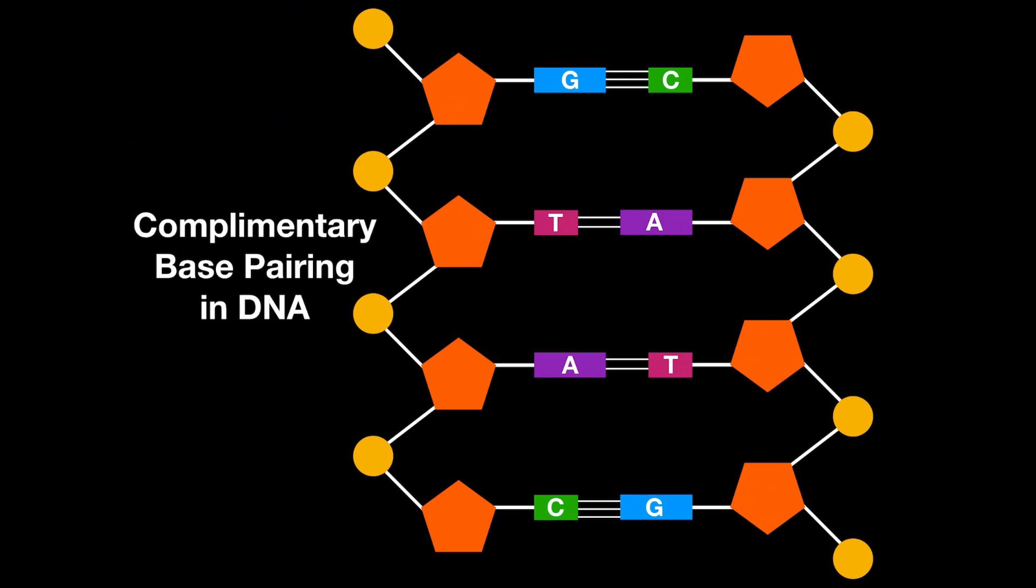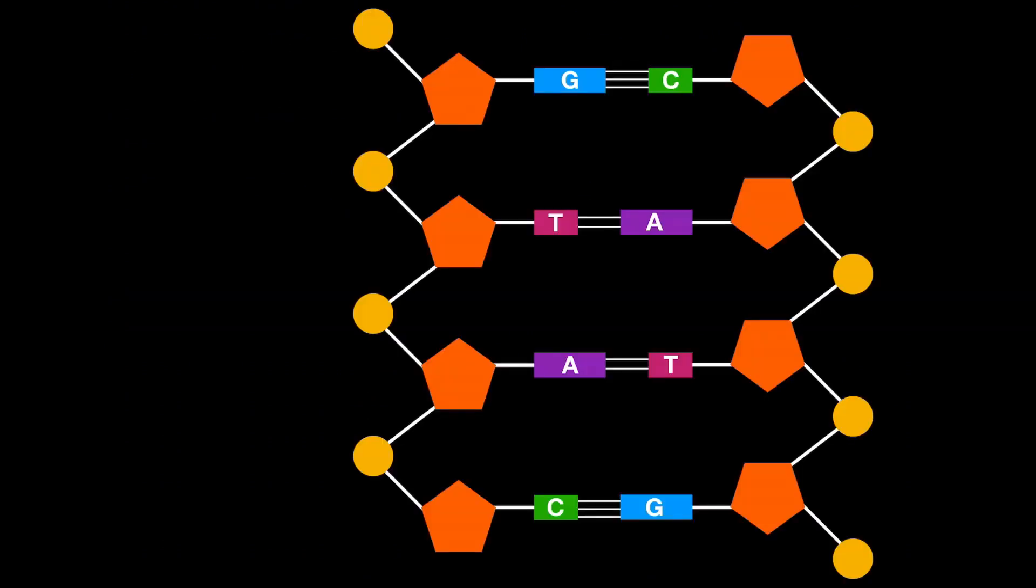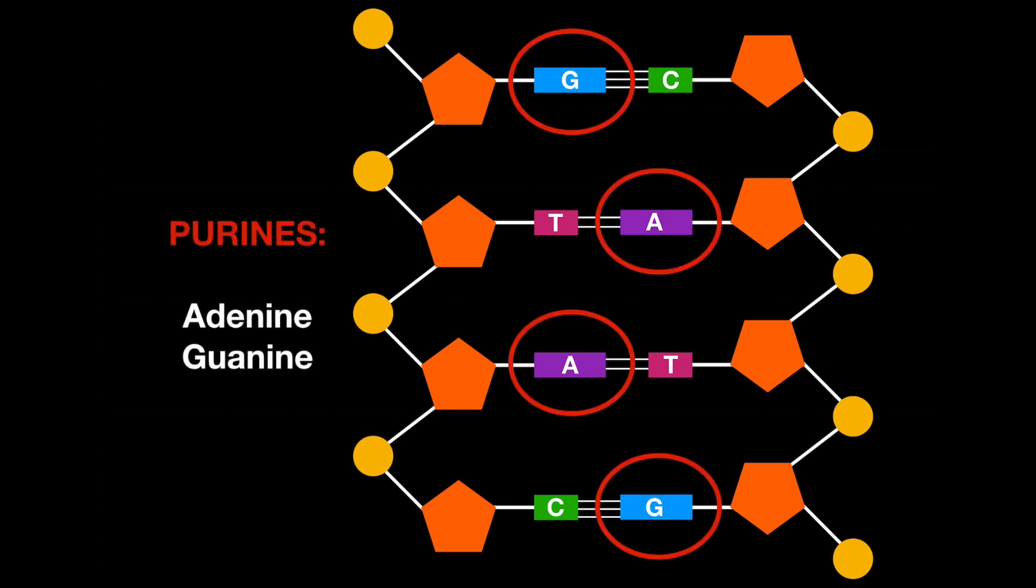The nitrogenous bases that make up the complementary base pairing in DNA can be separated into two distinct chemical groups. The first are the purines, and this includes adenine and guanine.